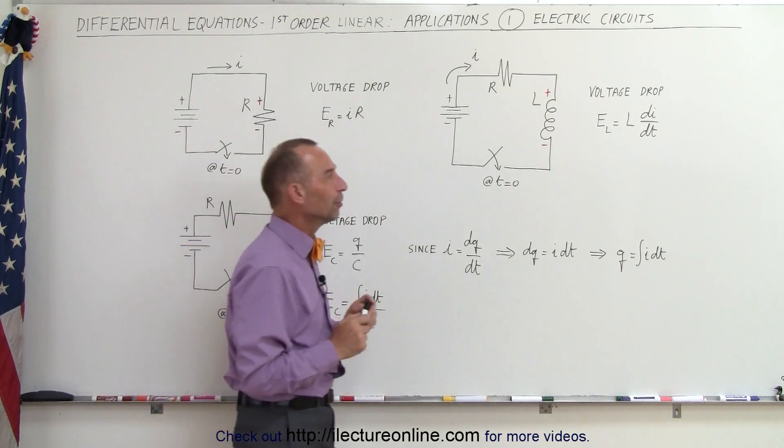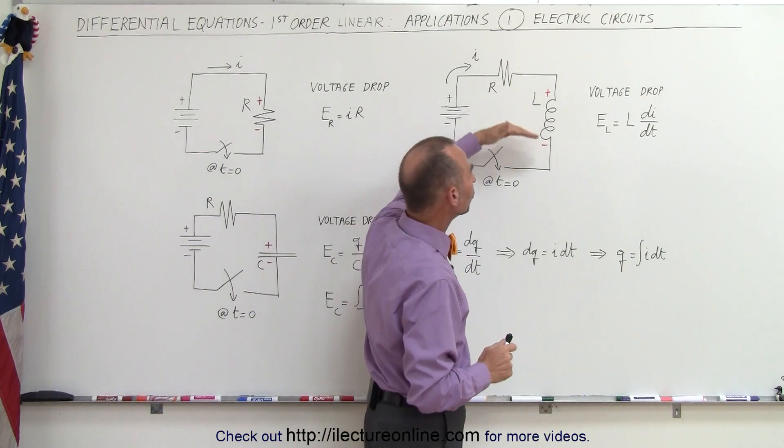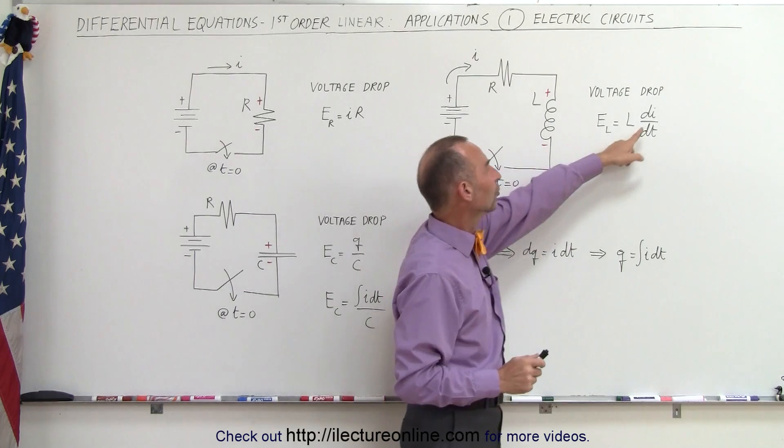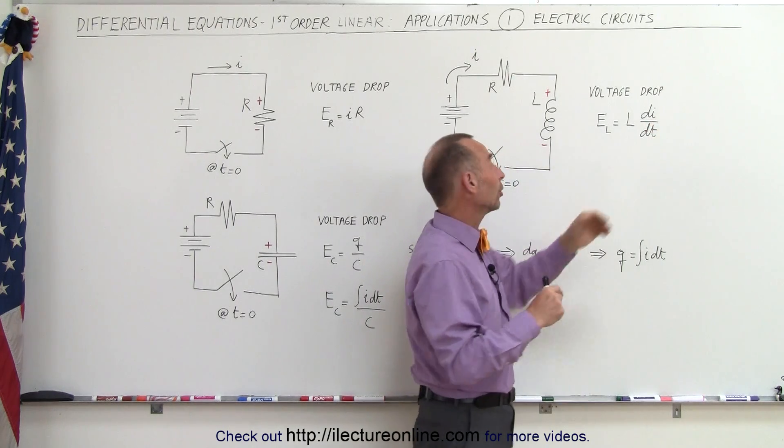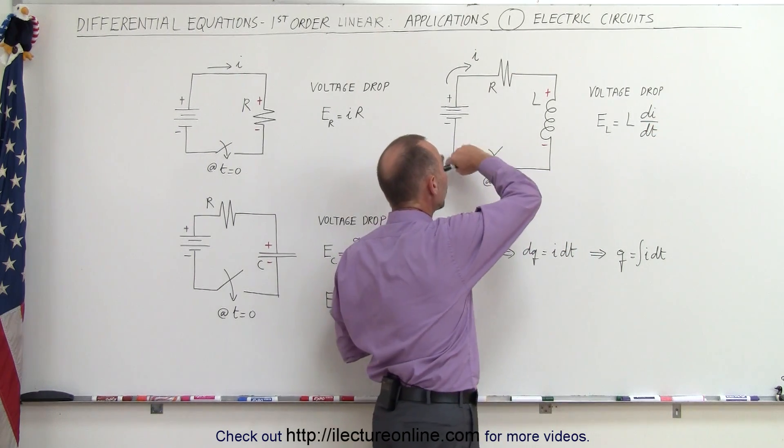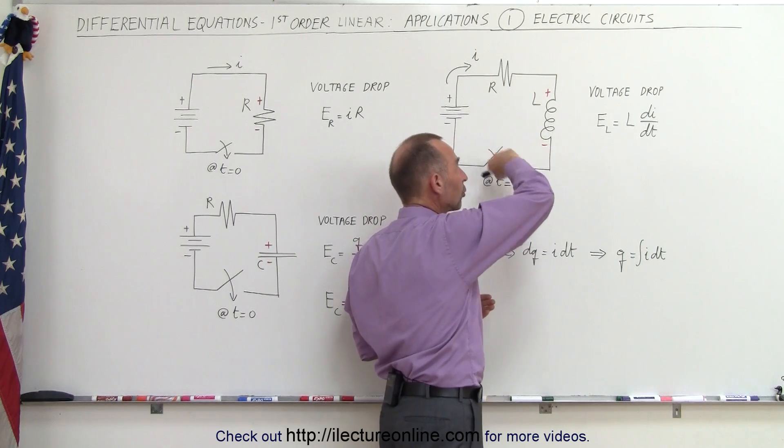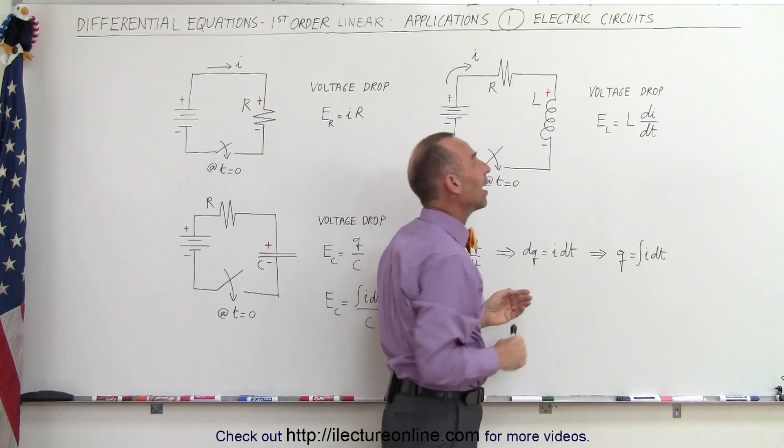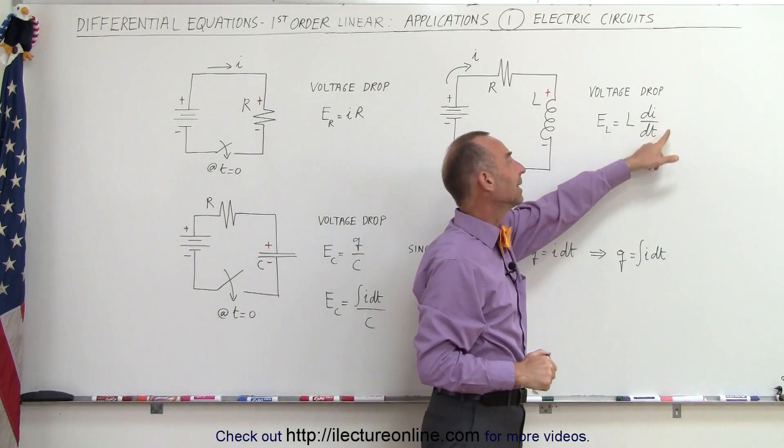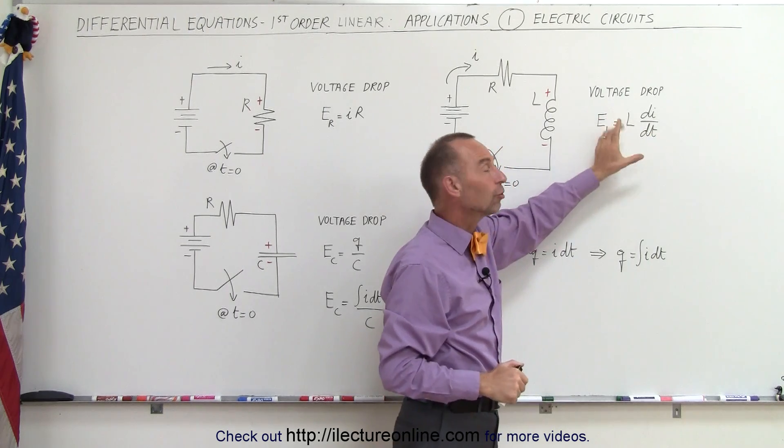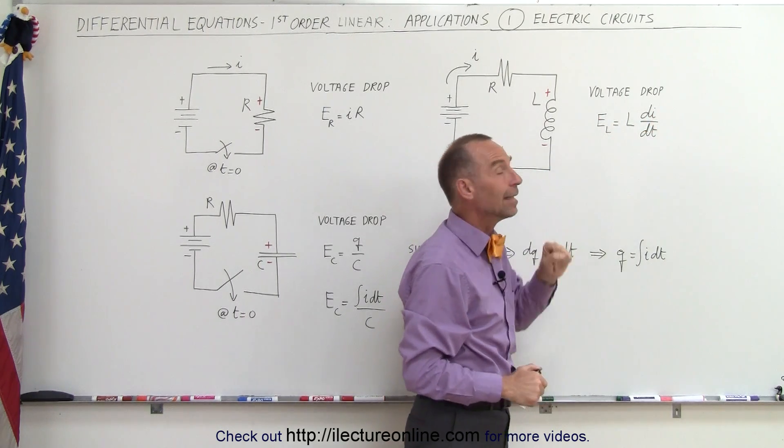With the inductor, we have to be a little careful. Notice that there'll be a voltage drop when the current increases. In other words, we close the switch, current begins to flow through the circuit, and the current increases over time. Therefore, if di/dt is positive, we have a voltage drop by multiplying the inductance L times di/dt.